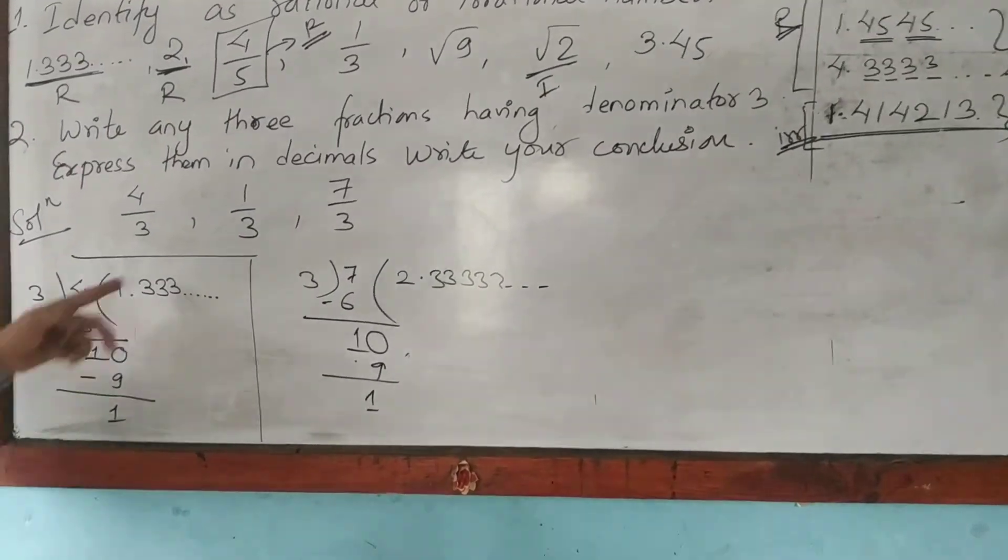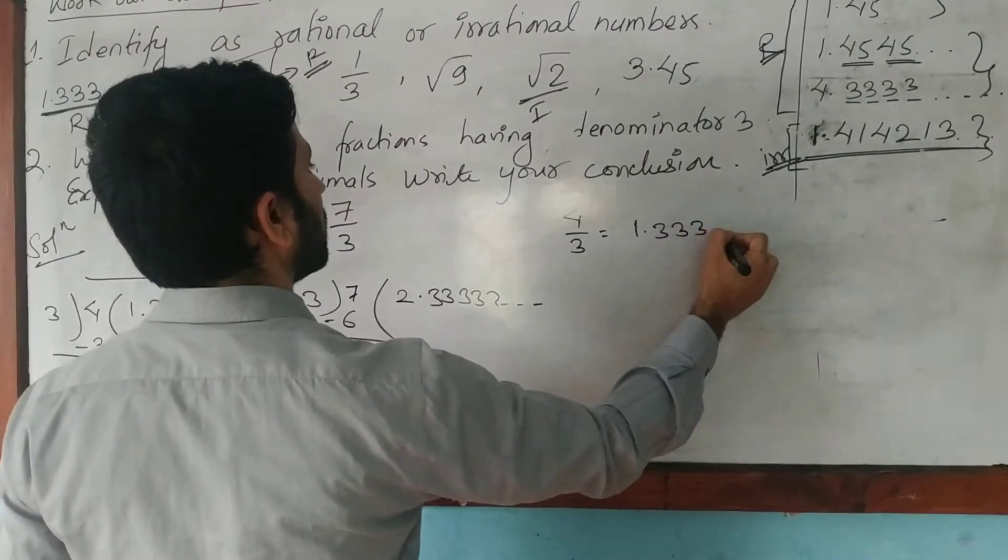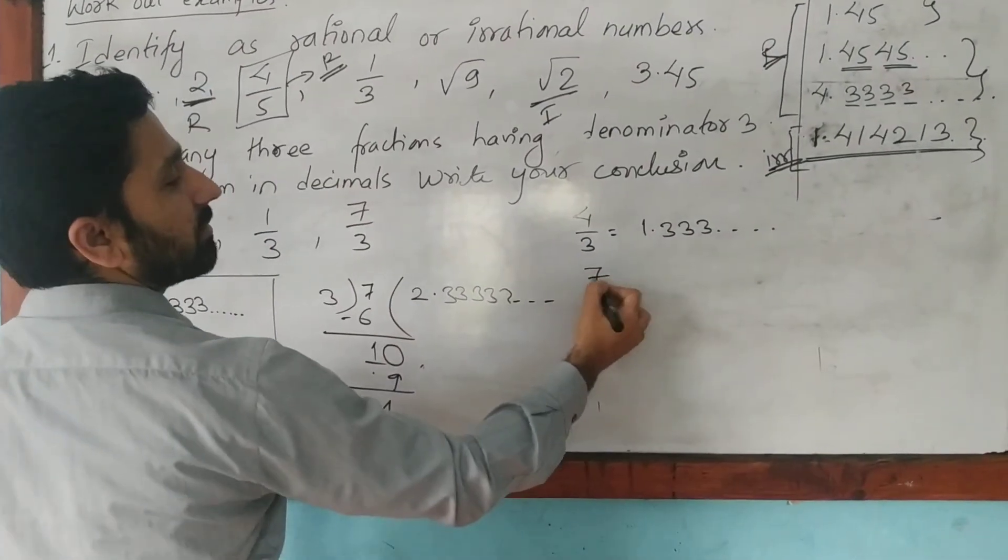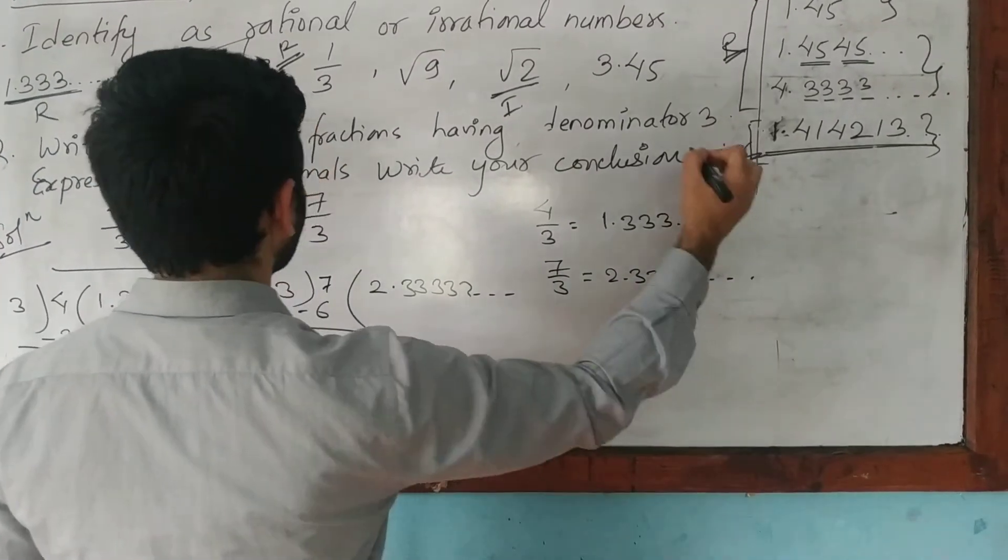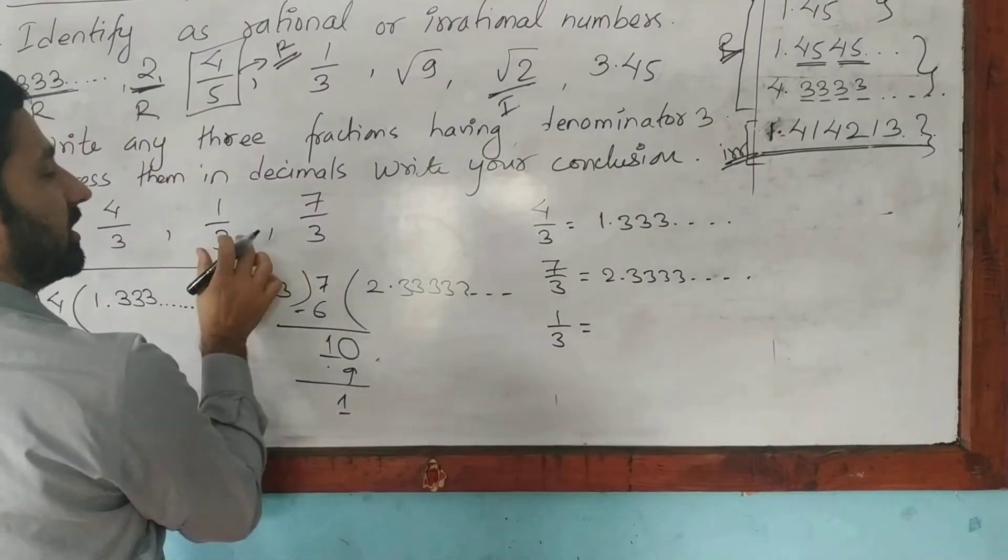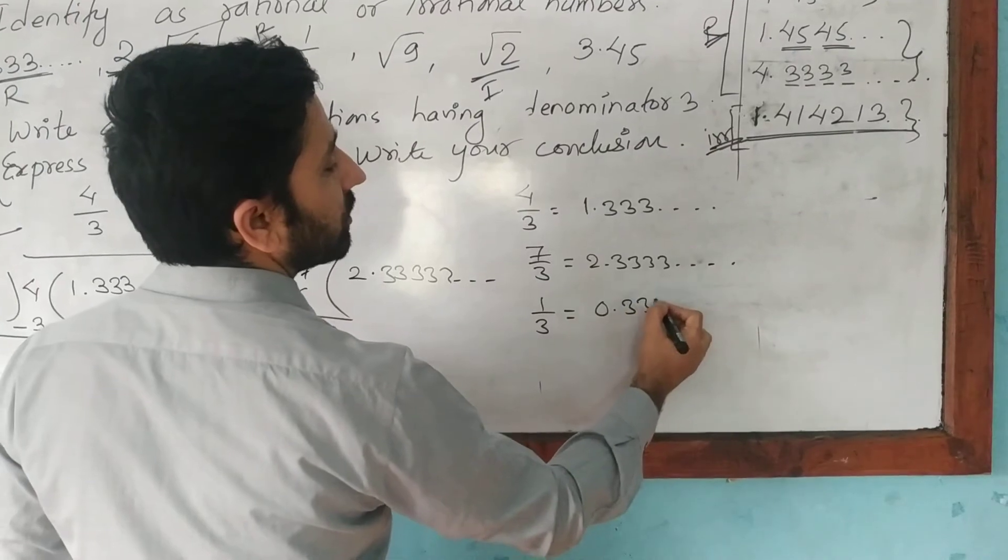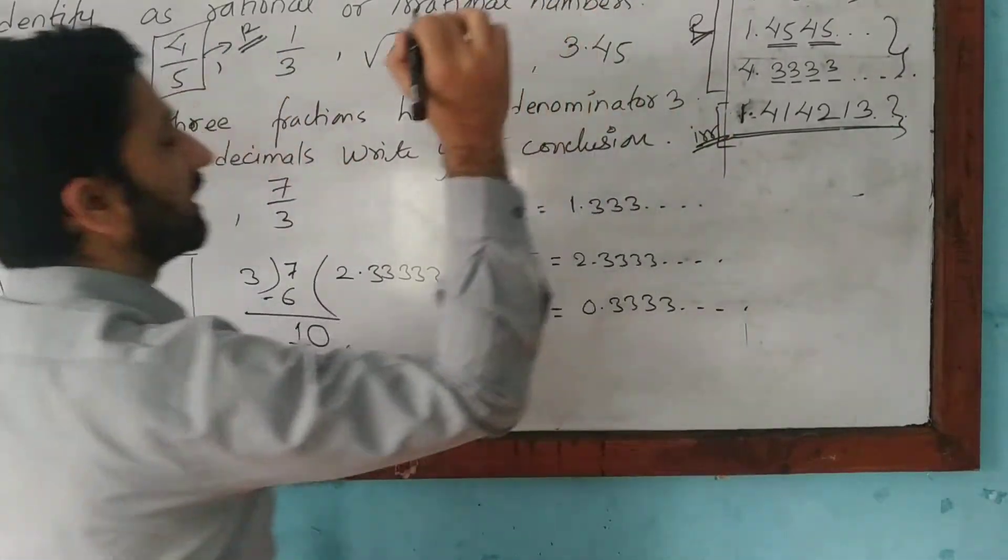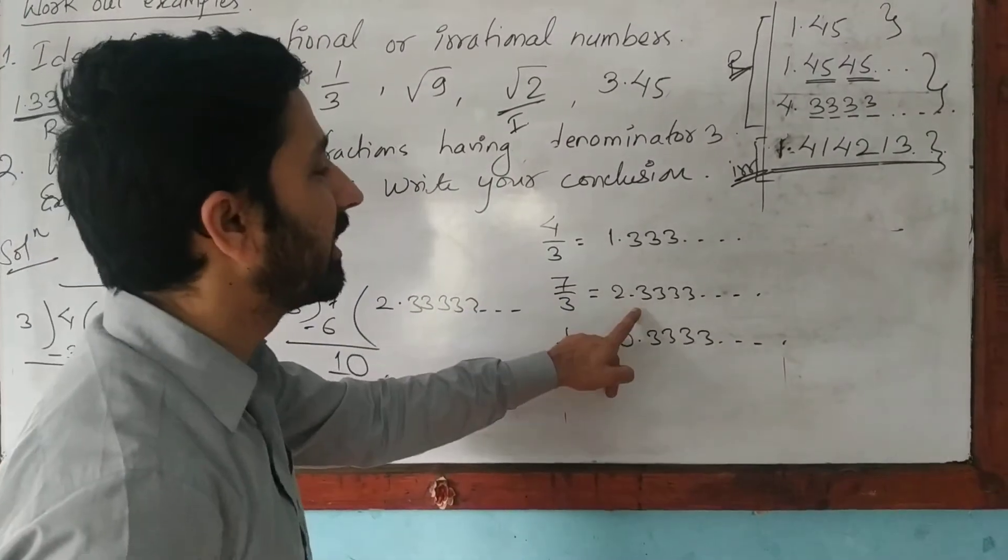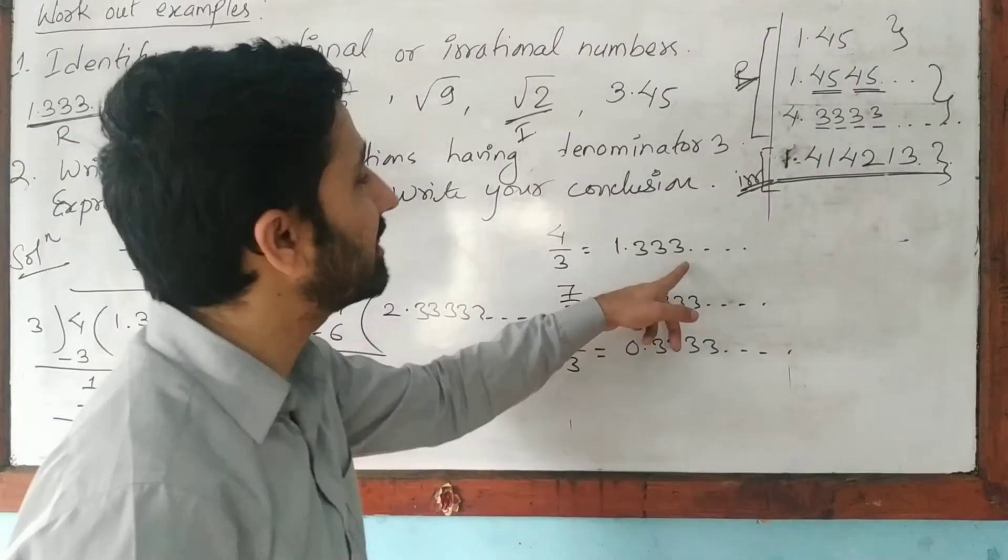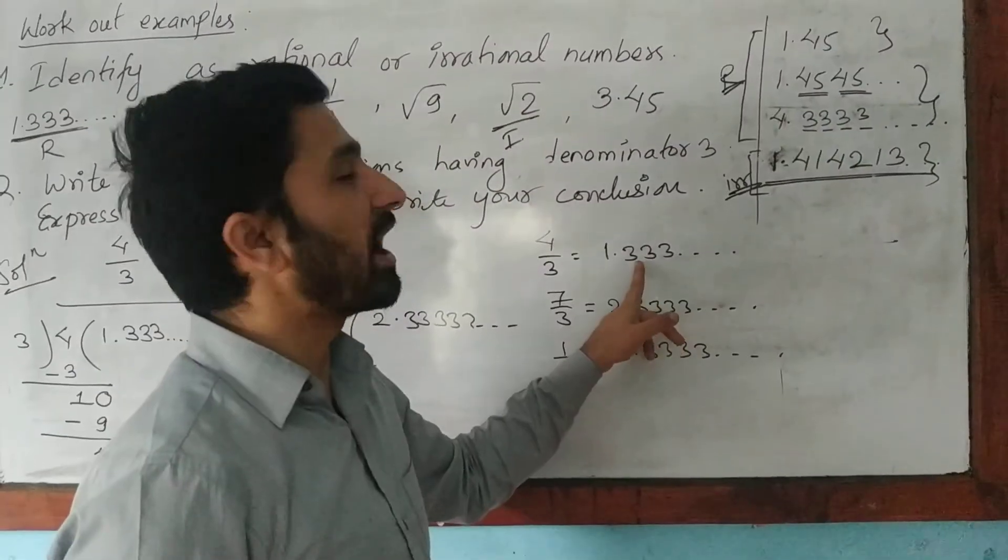Look at the conclusion. That means 4 by 3 will be equal to 1.333 and so on. 7 by 3 will be equal to 2.333 and so on. Similarly, 1 by 3, you can do this in rough, I have done here. It will be 0.3333 and so on, and goes on. Let's look at the decimals now. What kind of decimals are they? They are non-terminating, doesn't it? Goes on. But they are recurring.